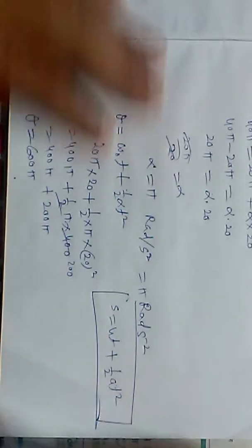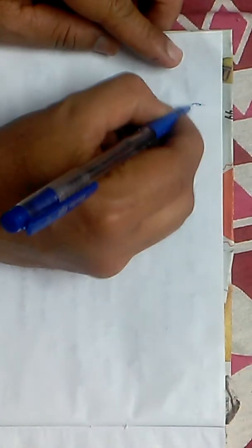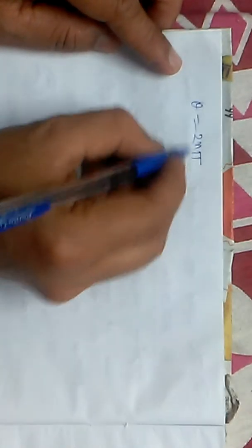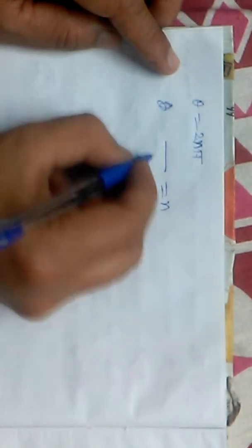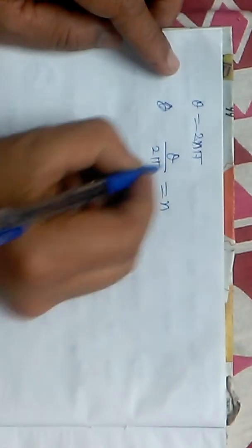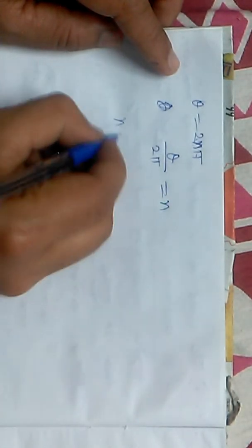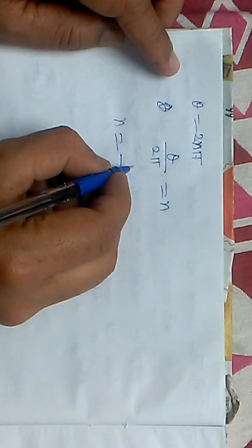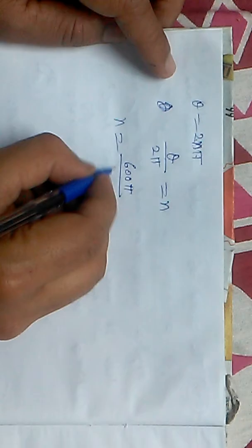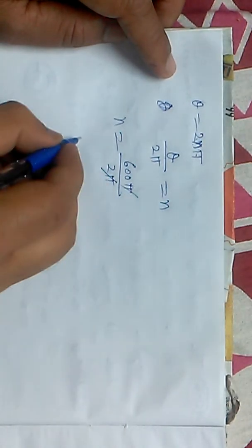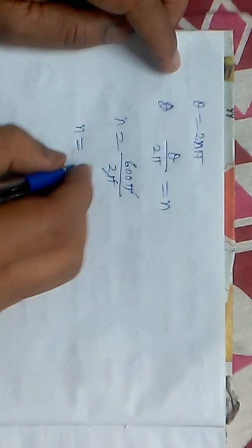The relation between number of revolutions and angle is theta equals 2 pi times n, where n is the number of revolutions. So n equals theta divided by 2 pi. With theta value 600 pi, we get n equals 600 pi divided by 2 pi, which equals 300 revolutions.